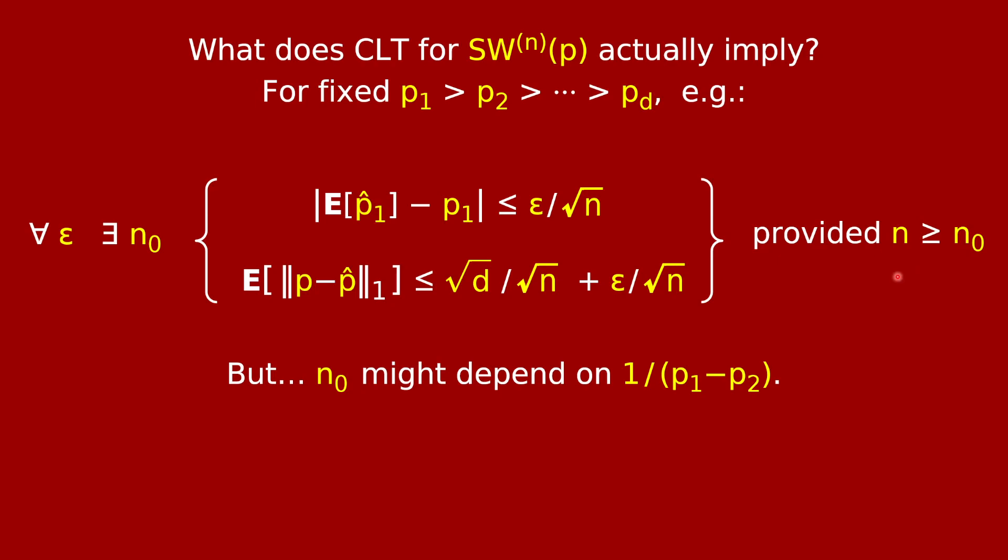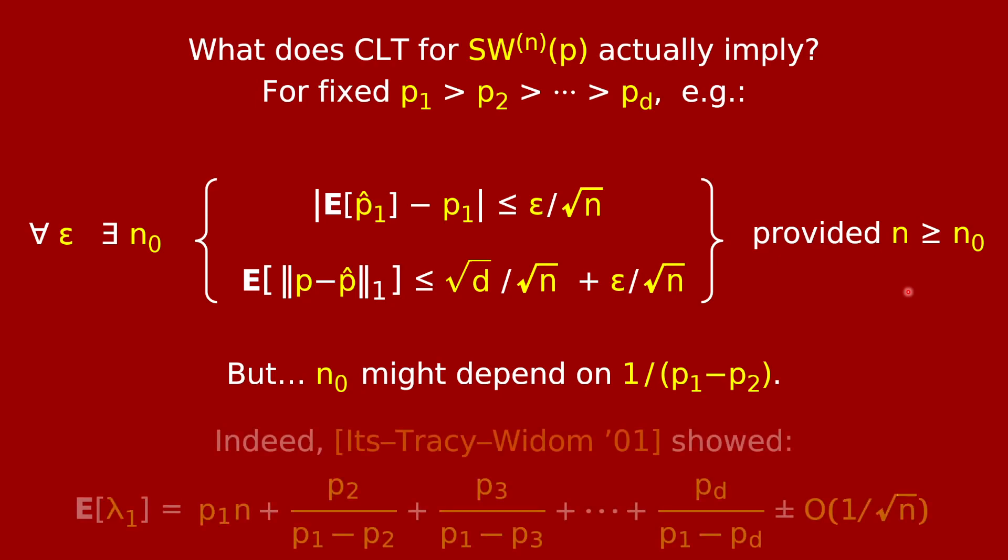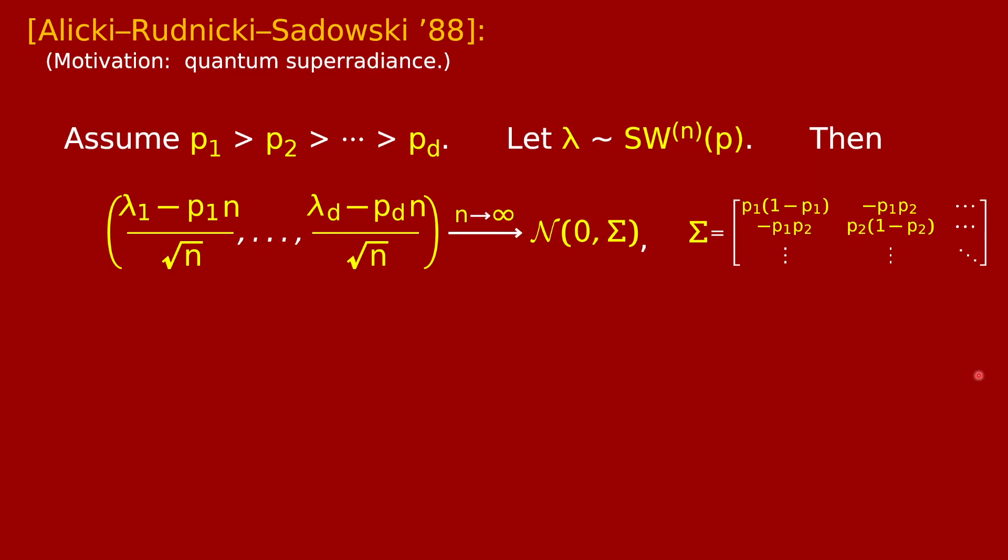Moreover, it's not just that this n zero might depend on d, but it might depend on something even less obvious, like the size of the gap between two consecutive p's. It might depend on 1 over p1 minus p2. In fact, this also is true. For example, Itz, Tracy, and Widom in 2001 did a more refined study of this central limit theorem and showed that the expected value of lambda 1, the number of boxes in the first row, is close to p1 times n. But there's an additive term that looks like this funny expression with p1 minus p2 in the denominator. So if p1 is really close to p2, then this term blows up.